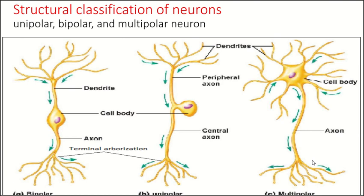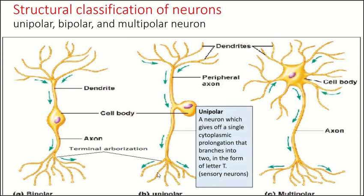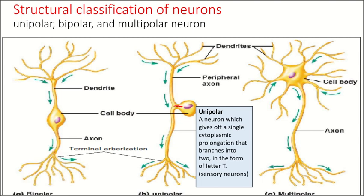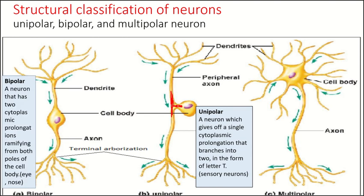Another classification of neurons is according to structure. Neurons are classified into unipolar, bipolar, and multipolar. A unipolar neuron is a neuron which gives off a single cytoplasmic prolongation that branches into two in the form of the letter T, as you can see here. So we have only a single cytoplasmic prolongation that branches into two. Unipolar neurons are mainly the sensory neurons in our body.